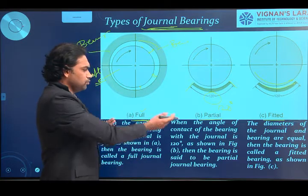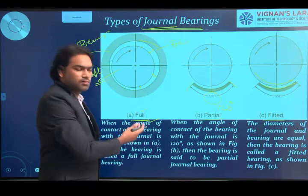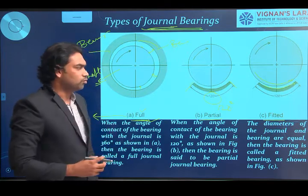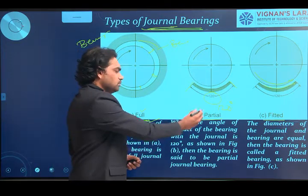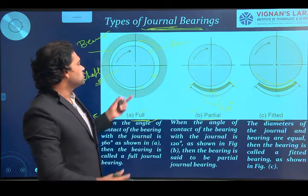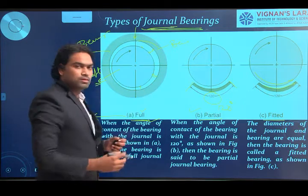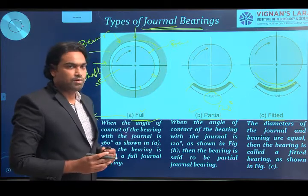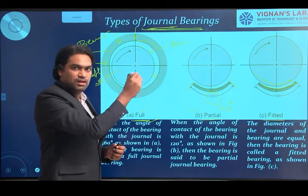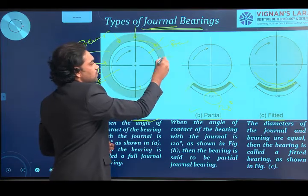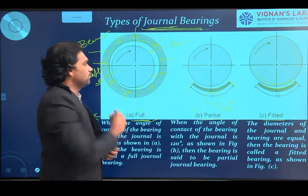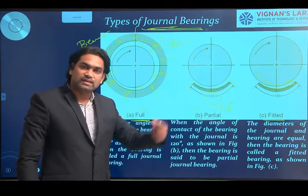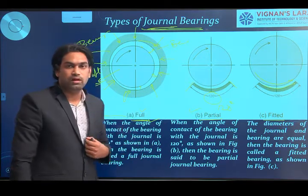The main difference between full and partial journal bearings is their application. In the full journal bearing, the load can act in any direction around the circumference — any radial direction perpendicular to the axis. So the full journal bearing can support loads in any direction around the circumference, which is its main advantage.